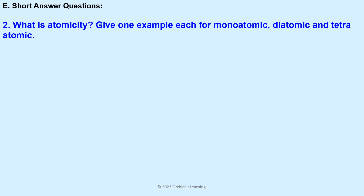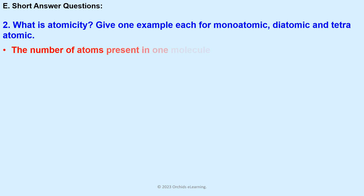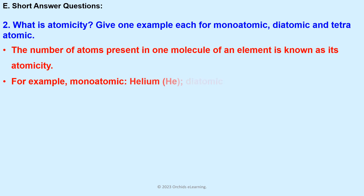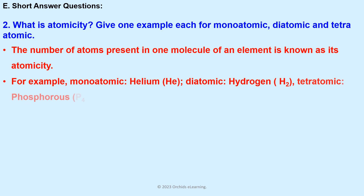What is atomicity? Give one example each for monoatomic, diatomic, and tetraatomic. The number of atoms present in one molecule of an element is known as its atomicity. For example: monoatomic — helium (He); diatomic — hydrogen (H2); tetraatomic — phosphorus (P4).